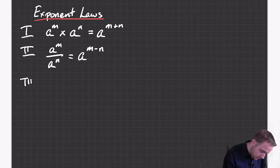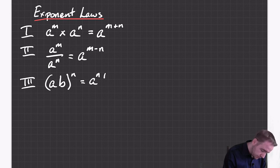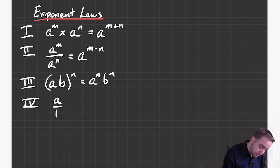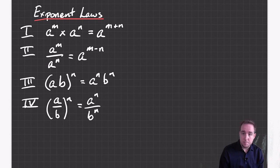The third one is if you have two different numbers multiplied together and they have an exponent, then each one gets the exponent. And another one is if you have a fraction which is made up of two numbers and there's an exponent, each number — the top one and the bottom one — gets the exponent.